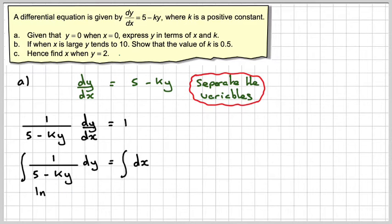If we integrate it, we could try ln of 5 minus ky, but when we differentiate this we get a minus k over 5 minus ky. So to compensate for that, we need to put a minus sign in front and divide by k. When we integrate 1, we just get x, but we get a plus c.